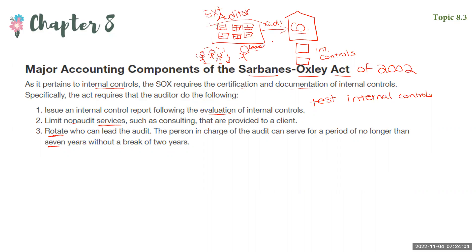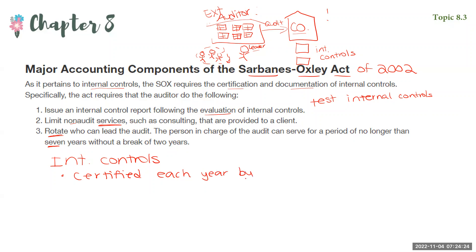If any of these things are violated, that's bad for the external auditor and bad for the company. Specific to internal controls, they must be certified every year by top management confirming they are in place and working. If there is any lying — if they didn't certify or didn't test it but claimed it was working — they can face up to 20 to 25 years in prison or a $5 million fine.